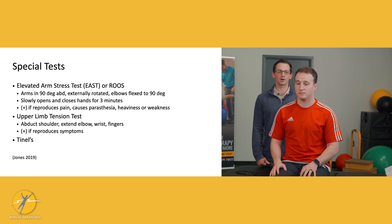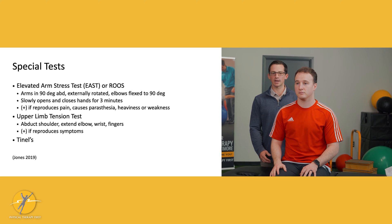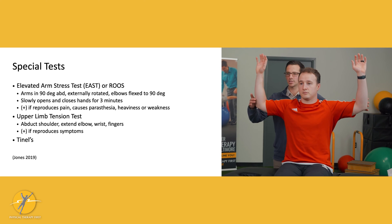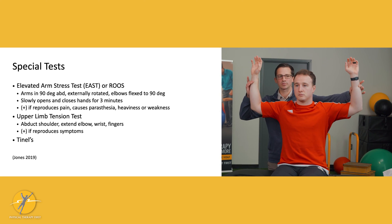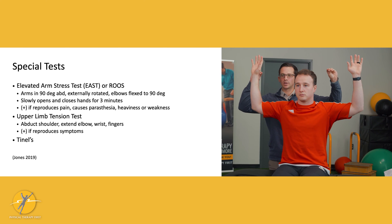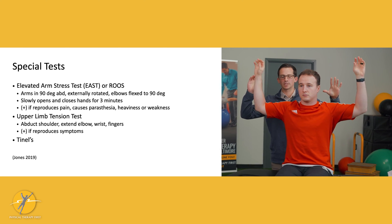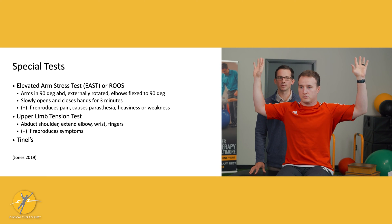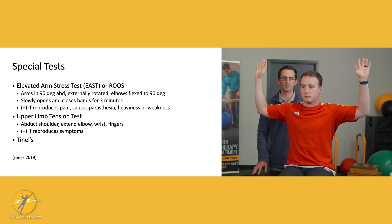Next is the elevated arm stress test, or the ROOST test. Have the patient bring both arms up to 90 degrees abduction, 90 degrees elbow flexion, and 90 degrees external rotation. Then have them slowly open and close their hands continuously for three minutes. You are looking mainly for symptom reproduction here — if any of the symptoms they came in with are worsened, then this is a positive test.